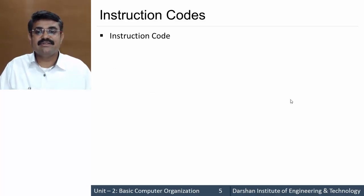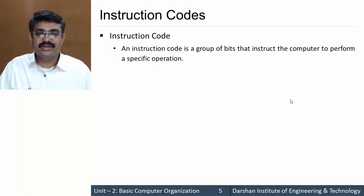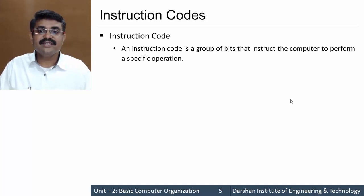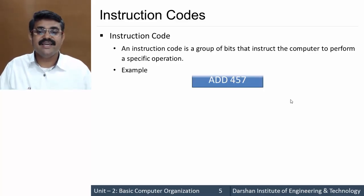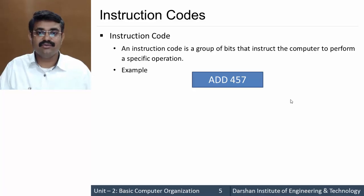An instruction code is a group of bits that instructs the computer to perform a specific operation. We can say it is nothing but the instruction itself, but in the form of binary. For example, 'ADD 457' means ADD is an instruction code with address 457 — together this forms an instruction.